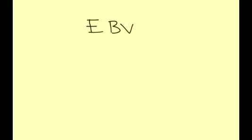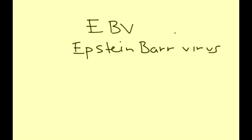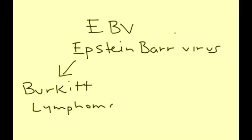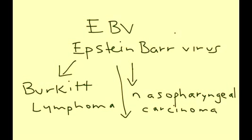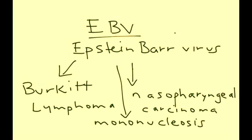A very important part of Burkitt's lymphoma on exam questions is the relationship with the Epstein-Barr virus. This virus is associated with Burkitt's lymphoma, but interestingly, Epstein-Barr virus is also associated with other malignancies and medical conditions. Most commonly, Epstein-Barr is associated with nasopharyngeal carcinoma, and it's also associated with the more benign condition mononucleosis. In clinical vignettes about Burkitt's lymphoma, they'll mention mono or nasopharyngeal carcinoma to see if you can identify the common link, which is the Epstein-Barr virus.